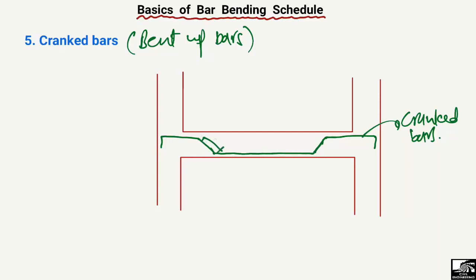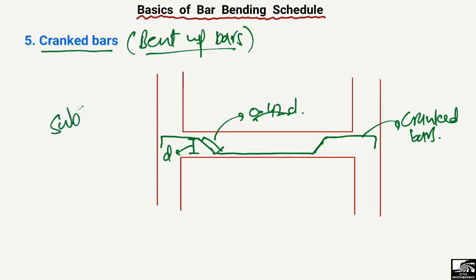The length of the crank bar bend can be found using the formula 0.42 times D, where D is the distance from the bottom reinforcement edge to the top reinforcement. This is how to find out the bent-up dimension of the crank bar. By bending the bars, we achieve both positive and negative reinforcement without cutting. We hope you understand these different technical terms. Don't forget to subscribe to our channel. Thank you for watching.